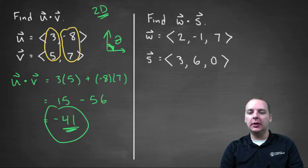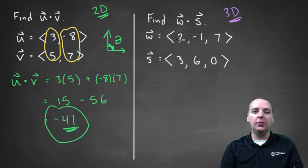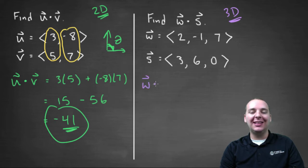Alright, let's do the next two vectors here. These are three-dimensional vectors. We have vector w and vector s. Vector w is <2, -1, 7>, and s is <3, 6, 0>. So we're going to take their dot product the exact same way, nothing's different.